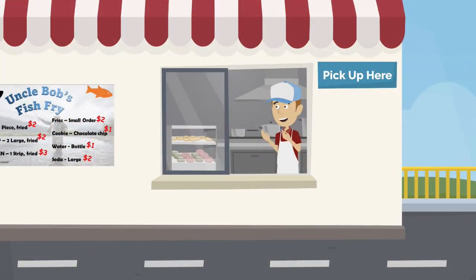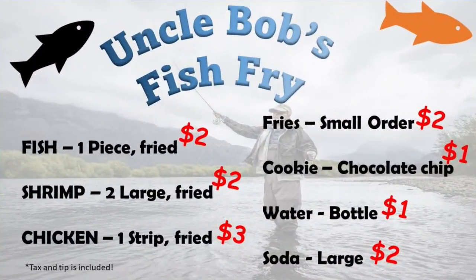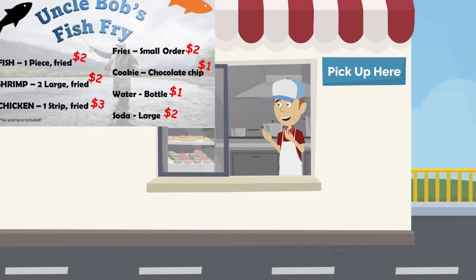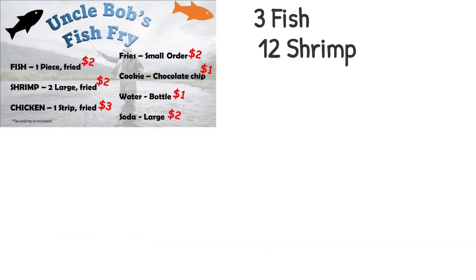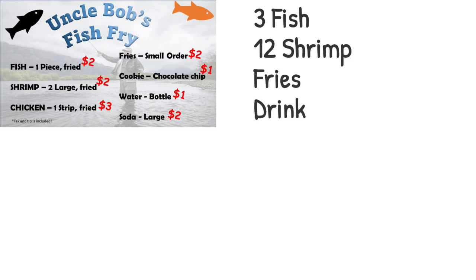Uncle Bob's Fish Fry offers the following items. Frank comes to the drive-thru and orders 3 pieces of fish, 12 shrimp, fries, and a large drink. The expression represents this order. What is the total for this order?